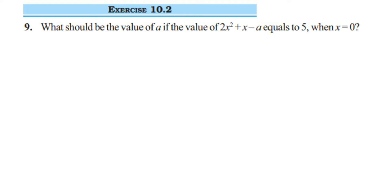Hello everyone, here is a question from Exercise 10.2, ninth question, chapter is Algebraic Expression of Class 7. The question is: what should be the value of 'a' if the value of 2x² + x - a equals to 5 when x is equal to 0?